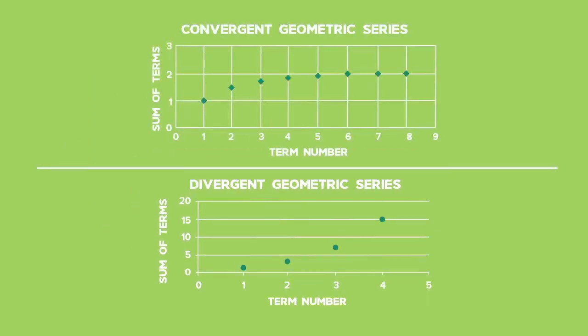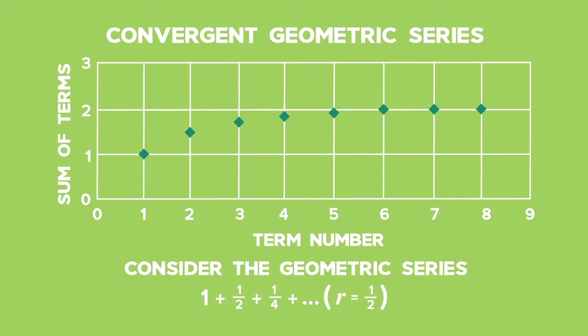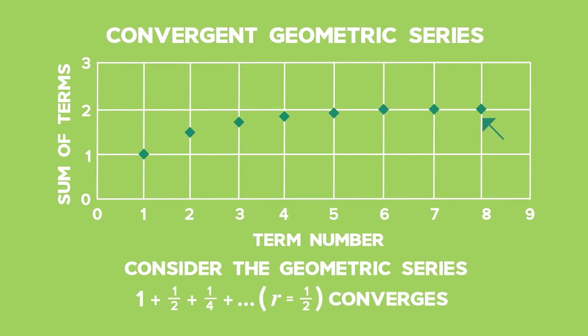Can you see in the first graph, where the geometric series has a ratio of a half, which is smaller than 1, that the terms of the series are converging to 2? So the geometric series 1 plus a half plus a quarter converges to 2, and we say that the sum of the series is 2.